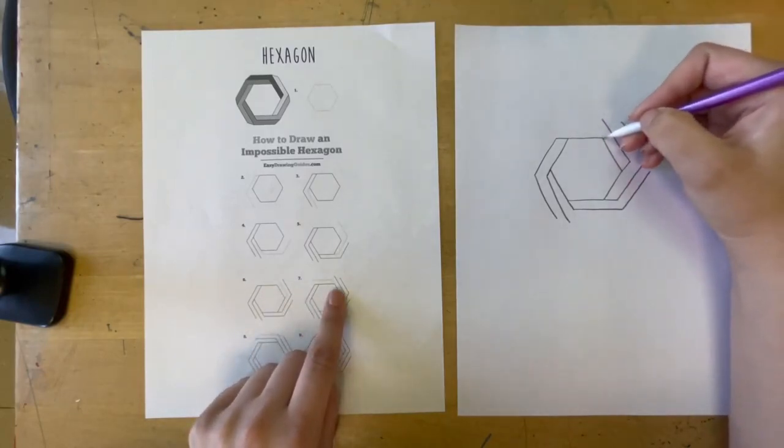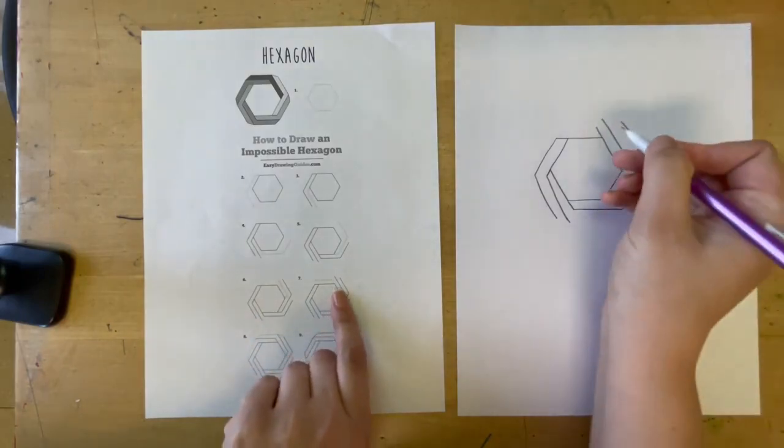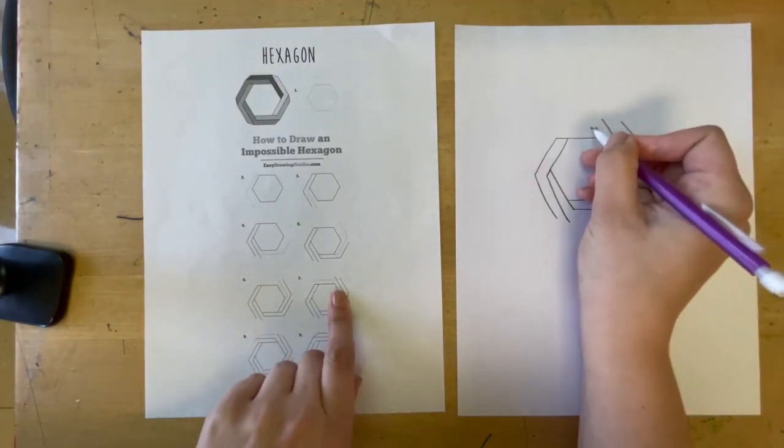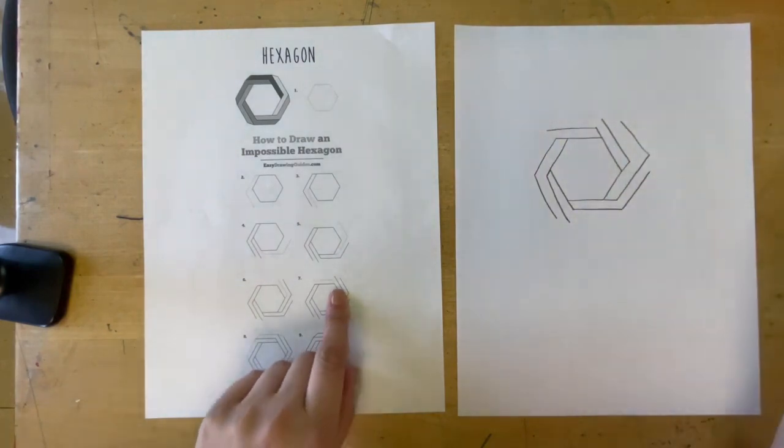Next one, we're extending this corner, but not higher than this line we just drew. And then this one looks like it goes a hair farther than this one right here.